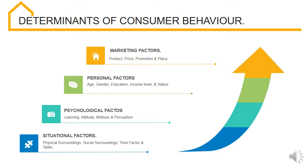Next is status in society. Persons enjoying higher status in society spend a lot of money on luxury products such as luxury cars, luxury watches, premium brands of clothing, jewellery, perfume, etc.